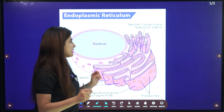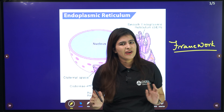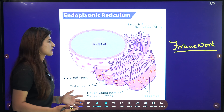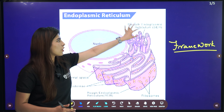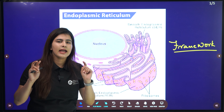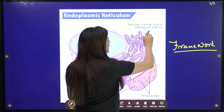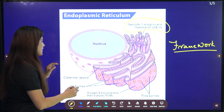First we start from ER. ER provides a framework to our cell — the cell gets its framework only because of the ER. Now, what are the two subdivisions in ER?